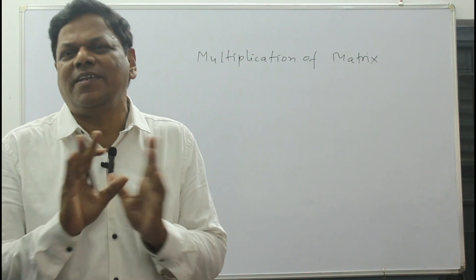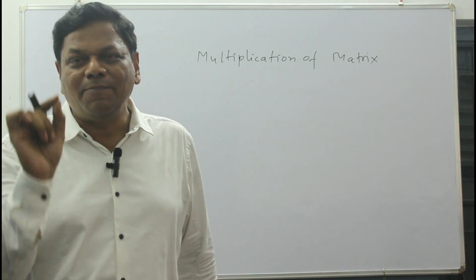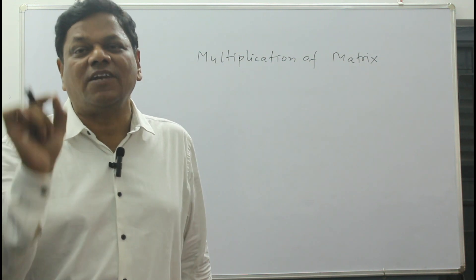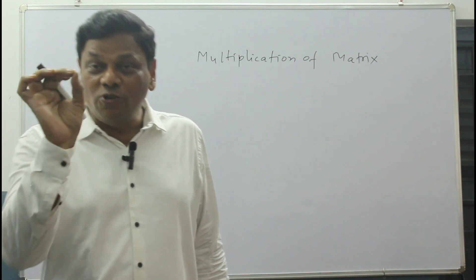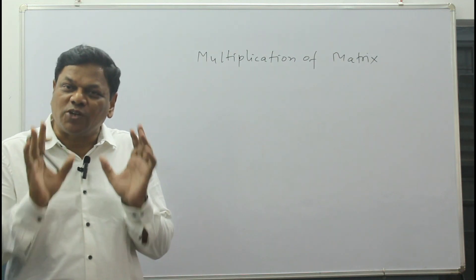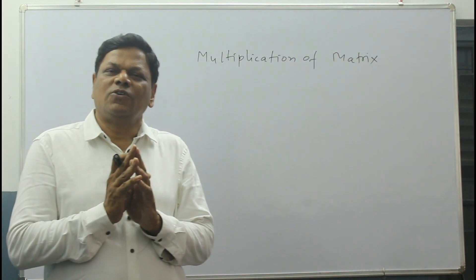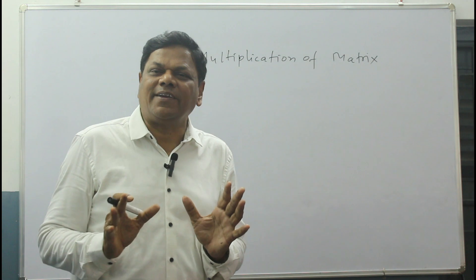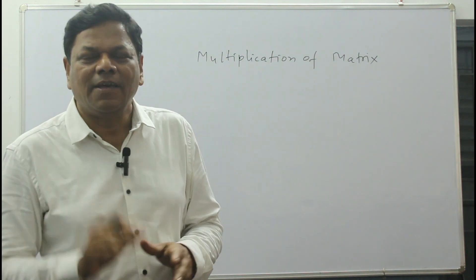Whatever we have done before is very easy to understand. But multiplication you have to understand very well. Some rules are there to multiply, and those also have to be clear to you. First I want to explain how to multiply a matrix and when you can multiply the matrix.